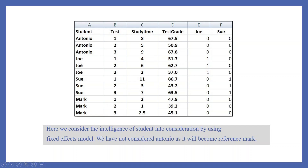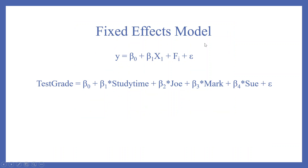Here we consider the intelligence of students by using the fixed effects model. We have not considered Antonio as it will be the reference category captured by the constant. The fixed effects model is: Y = β₀ + β₁x₁ + φᵢ + ε. So test grade = β₀ + β₁(study time) + β₂(Joe) + β₃(Mark) + β₄(Shu) + ε. Antonio will not appear here as it is captured by the constant.